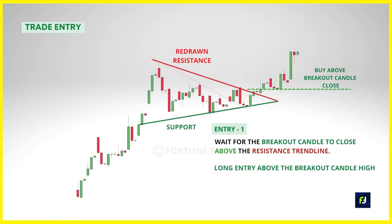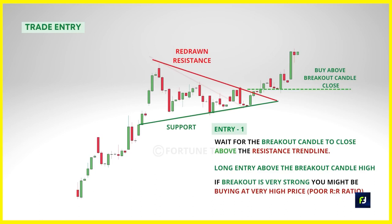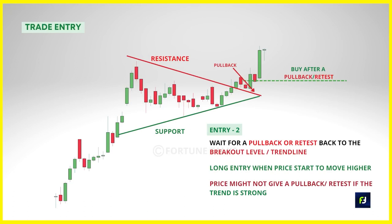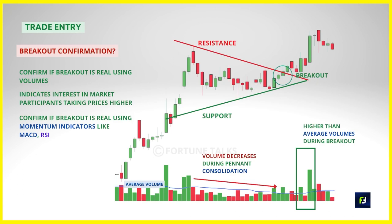Once the breakout candle closes above the pennant trendline, you can look to buy above that candle's high. If the breakout candle is too large and you'd be buying at a very high price affecting your reward-to-risk ratio, it is better not to take the trade, or wait for a pullback or retest back to the breakout level. However, because of the explosive nature of pennant breakouts, the chances for a pullback are fairly slim — so the best possible entry is above the breakout candle high. During pennant consolidation, volume should decrease due to the shrinking volatility and the breakout should be supported by higher-than-average volume indicating rising buying interest.